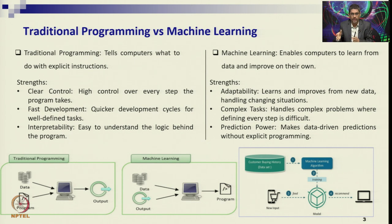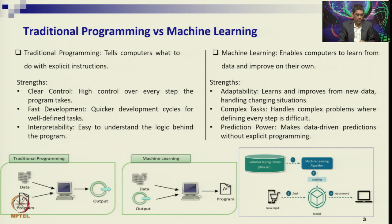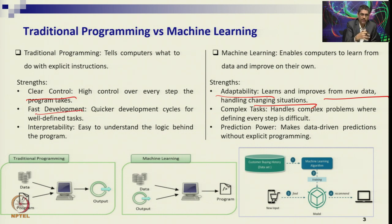We do guide the machine — whether supervised or unsupervised, what type of method to follow — but overall it learns based on the pattern, using ensemble methods. Based on the trained algorithm it predicts the future. In traditional methods you have clear control of your model and the tasks, but in machine learning it is adaptability — the machine learns and improves from new data and handles changing situations.